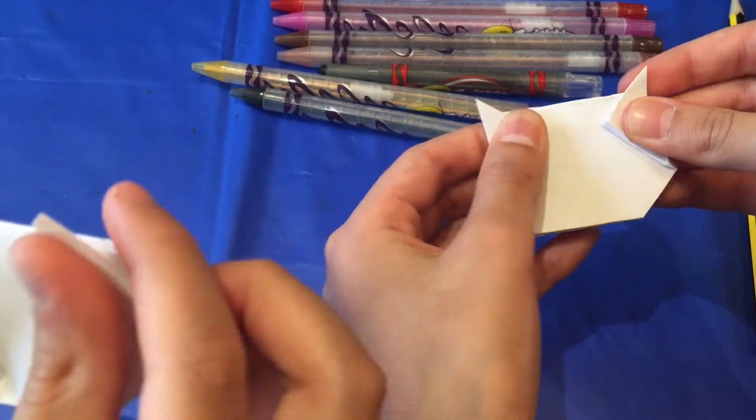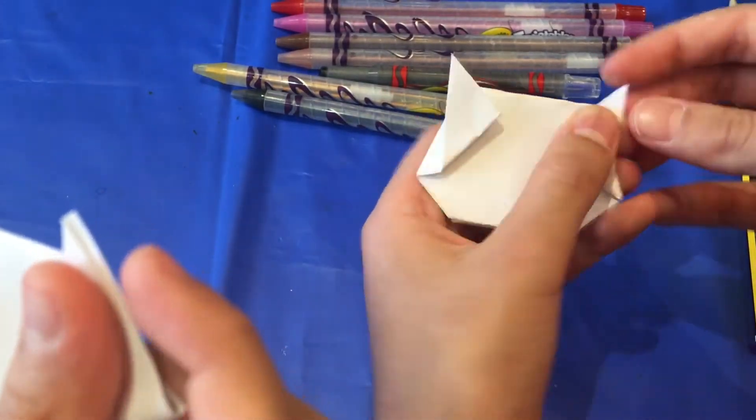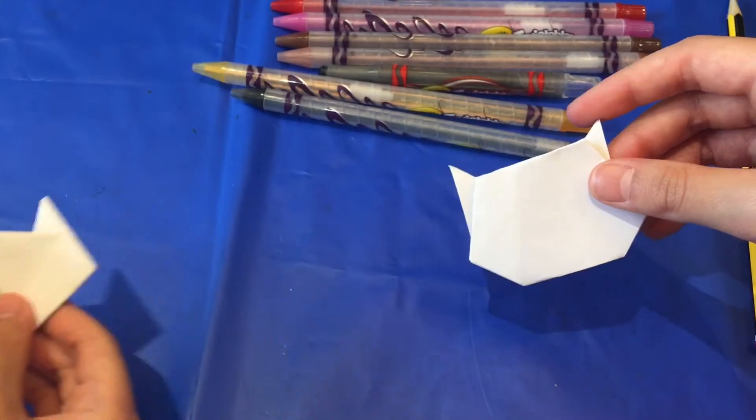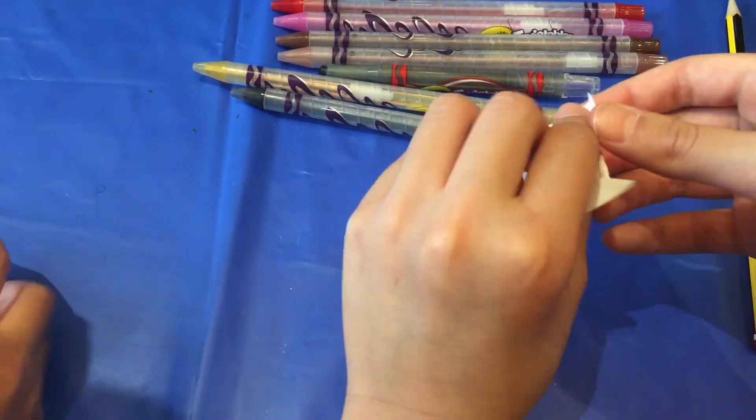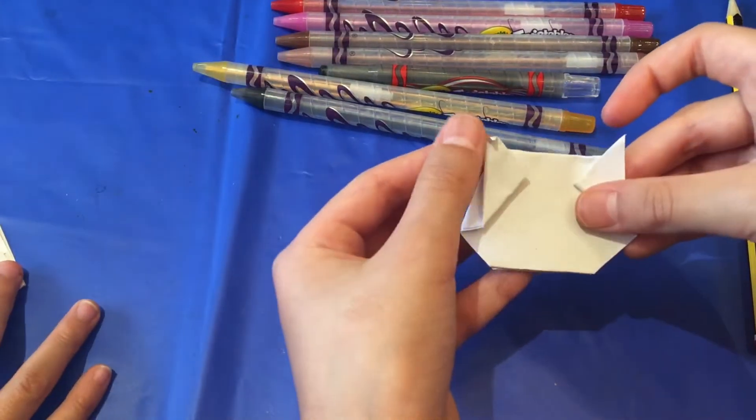There we go. And then we're going to just, you see how it's still a bit like a cat. We need to make them a bit so it's less so. We're just going to bend that. Like this.